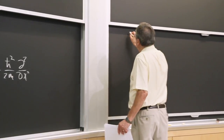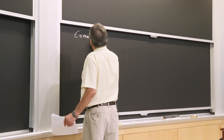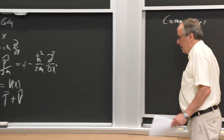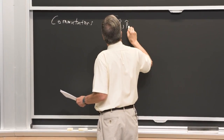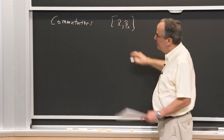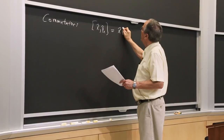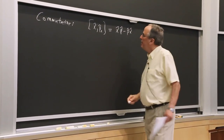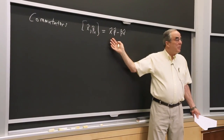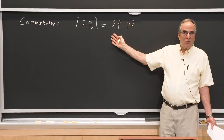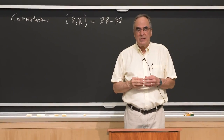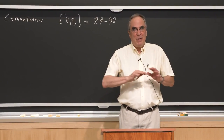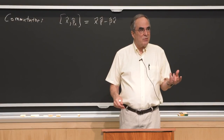The next topic is commutation rules, or commutators. One really important commutator is the commutator of the coordinate with the conjugate momentum, defined as xp minus px. The obvious thing would be that this commutator is 0 — why does the order matter? But it does matter. In fact, one approach to quantum mechanics is to start not with the usual postulates but with a set of commutation rules, from which everything can be derived.